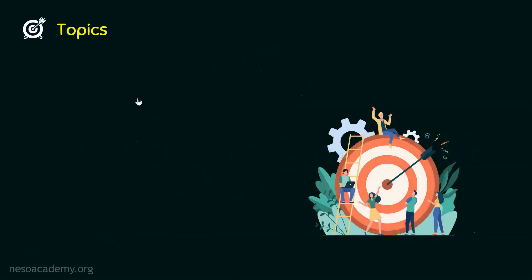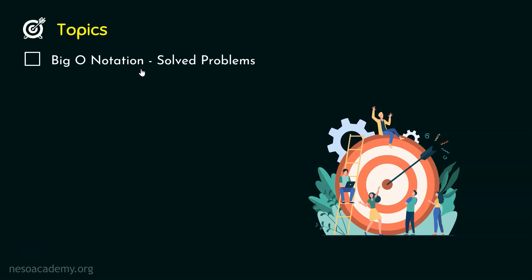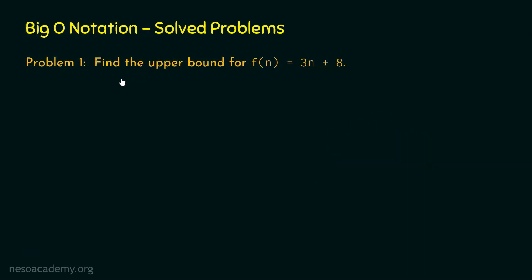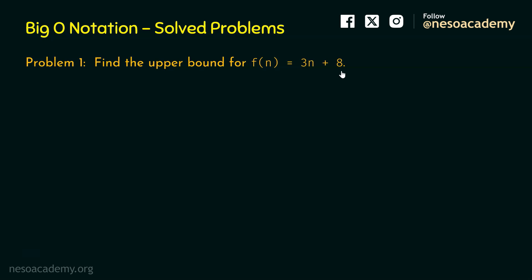In this lecture, we will discuss problems based on Big O Notation. Problem number 1 is: find the upper bound for f(n) equal to 3n plus 8. How do we find the upper bound for this function?